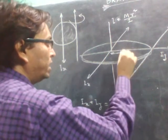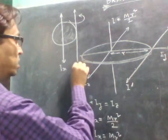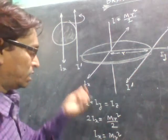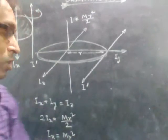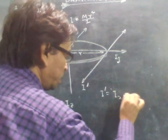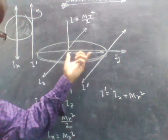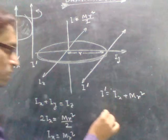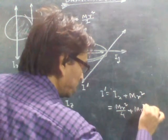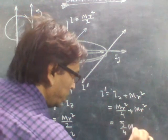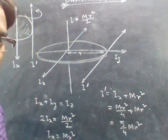So now applying the parallel axis theorem, we can find Iy dash. So Iy dash will be equal to Ix plus M into R². We have already calculated Ix — that is equal to MR²/4. So MR²/4 plus MR² gives us 5/4 MR². So this is the moment of inertia of the disk about one of its tangents at its side.